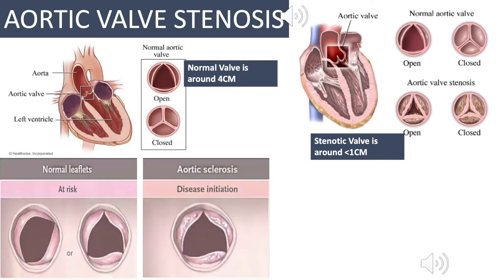Aortic sclerosis can also be caused by conditions like diabetes, hypertension, or high cholesterol — hyperlipidemia. These are all conditions that contribute towards aortic sclerosis. Sclerosis simply means hardening of the valves and can be caused by various different mechanisms. Rheumatic fever is probably the one you're most familiar with, but we will touch upon those topics in a different video.